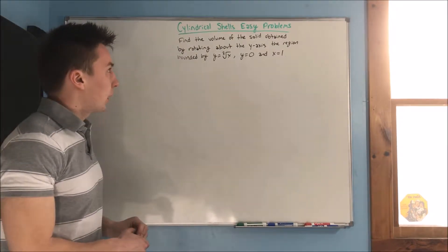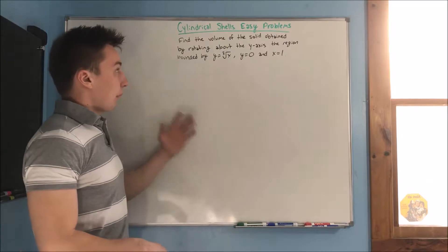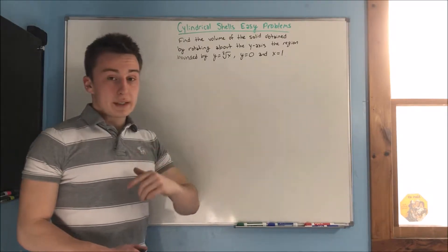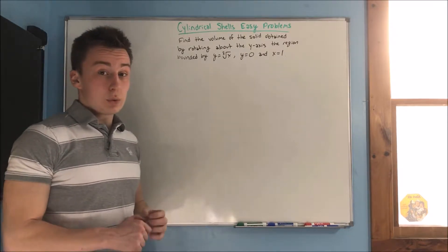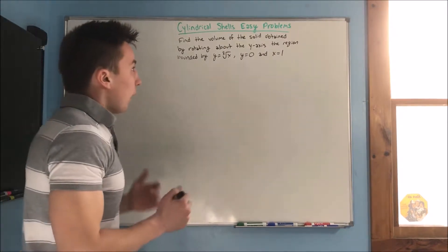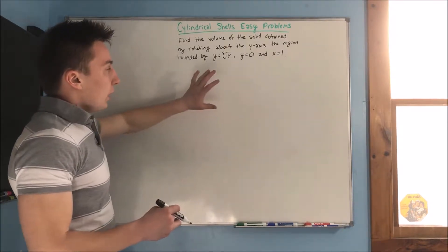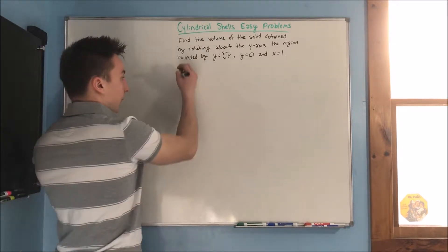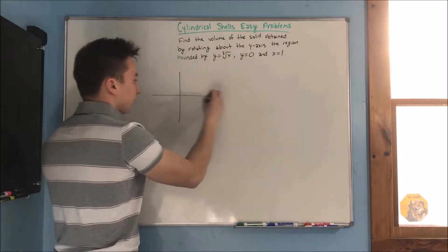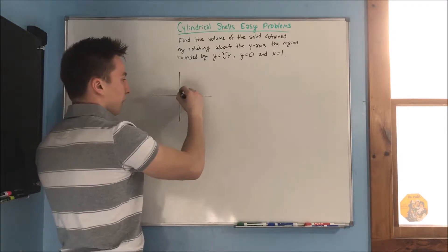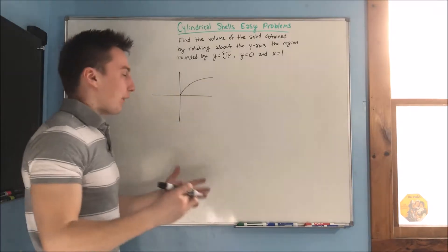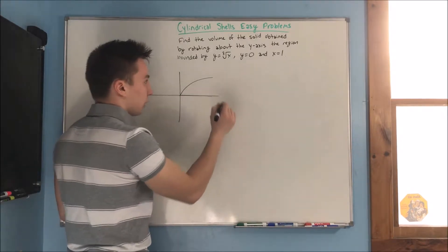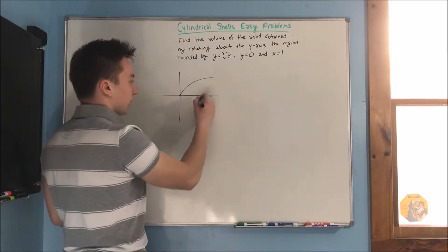We have our first question: find the volume of the solid obtained by rotating about the y-axis the region bounded by y equals the cube root of x, y equals 0, and x equals 1.